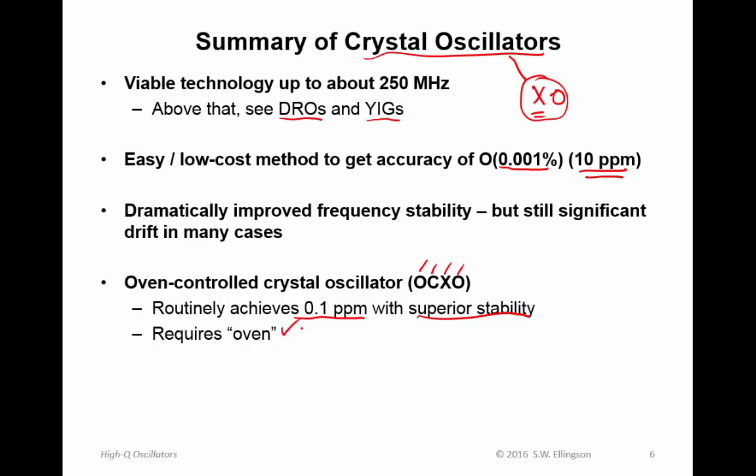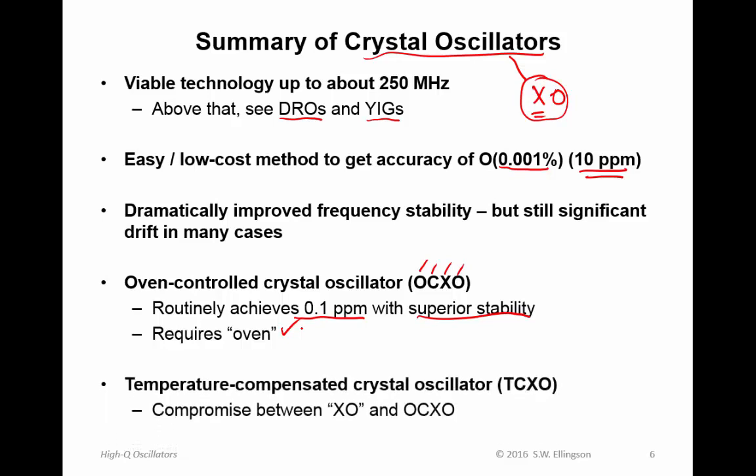To do better, we could use an oven-controlled crystal oscillator, or OCXO — note that crystal oscillator is often abbreviated XO. An OCXO is simply a crystal resonator with a heater attached, keeping the crystal at a specific temperature so that stability and accuracy improve greatly. An OCXO can achieve 0.1 parts per million with much better stability, though the trade-off is significant additional power to run the heater. A compromise is the temperature-compensated crystal oscillator, or TCXO, which uses additional electronics to sense and compensate for the actual temperature rather than using an oven.